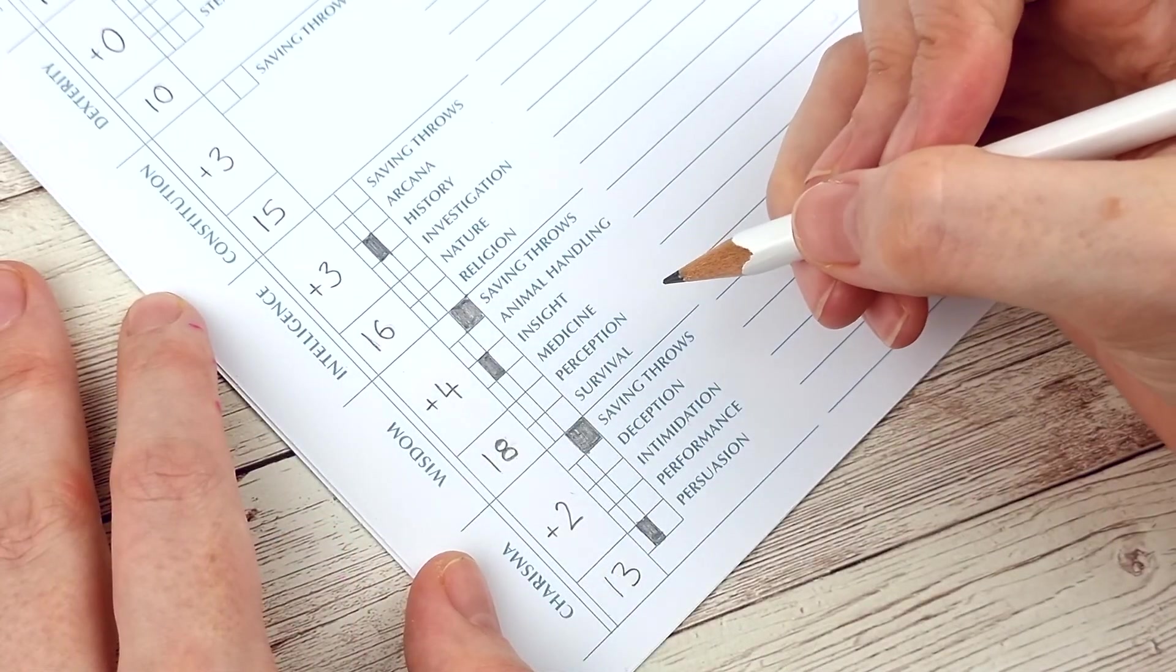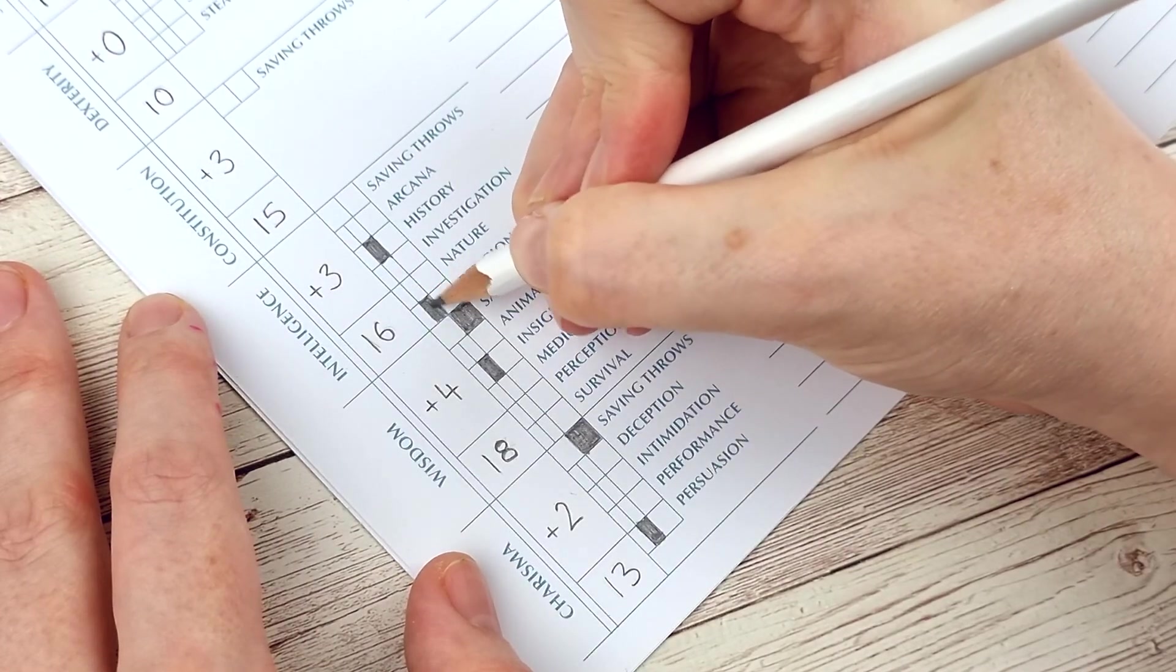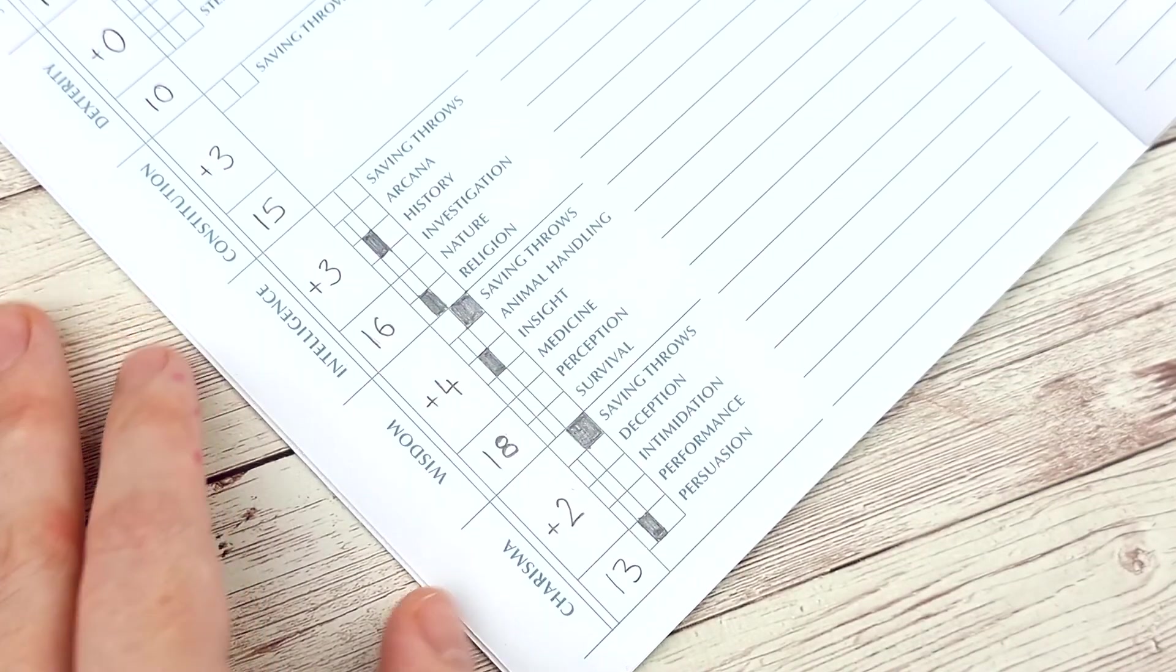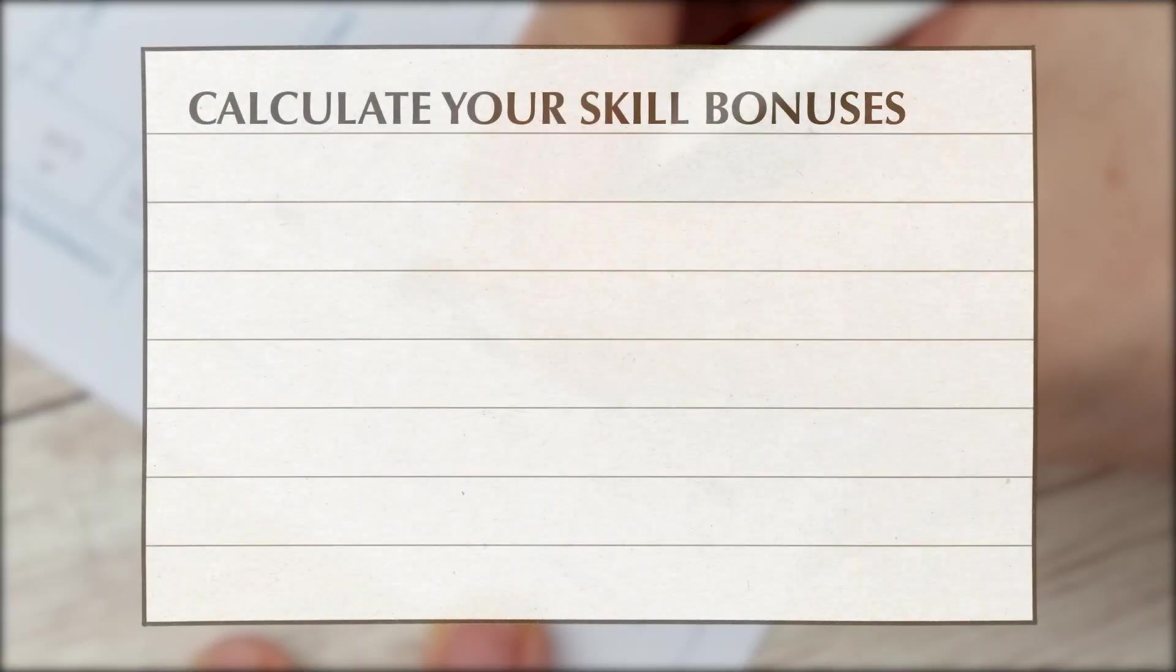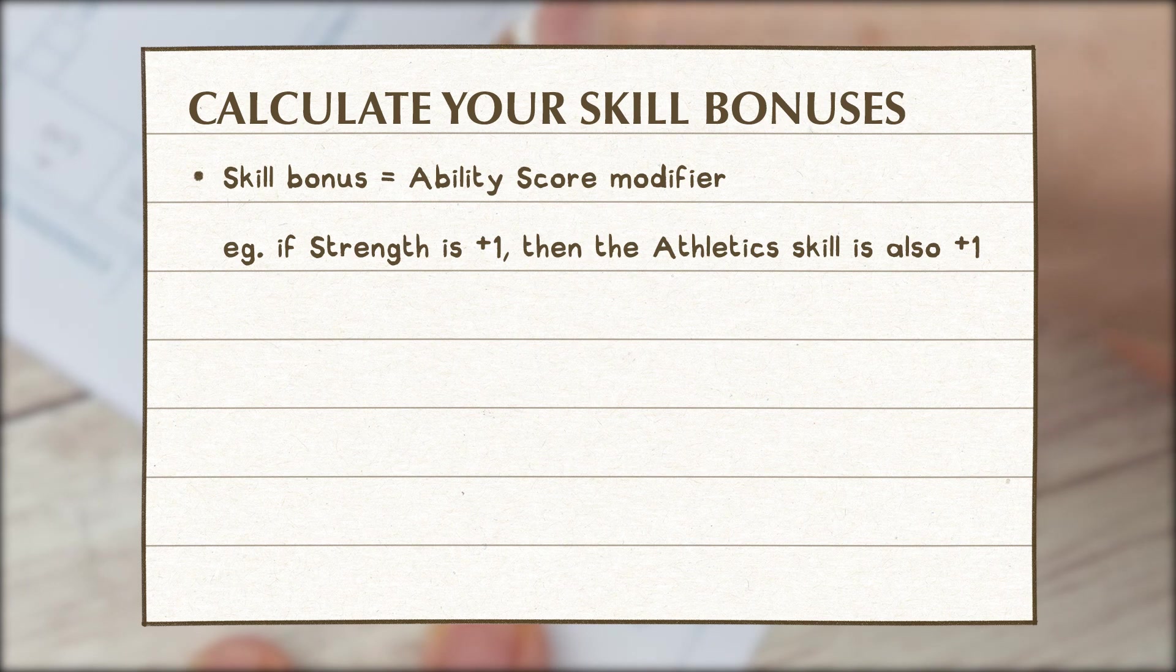Now let's look at your skills. Every skill is connected to an ability score. We're now going to calculate each skill bonus based on what we've marked down so far. A skill bonus is calculated very easily. It's simply the ability score modifier. If you are proficient with it, which you marked down before, you also add your proficiency bonus to this number.